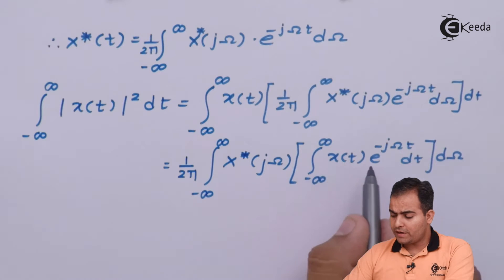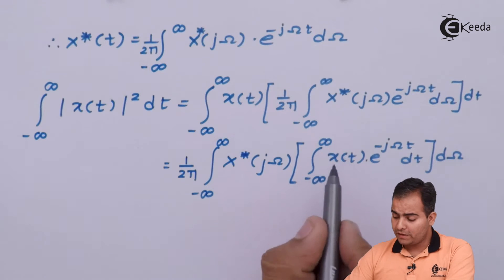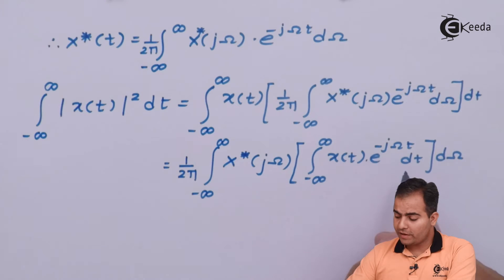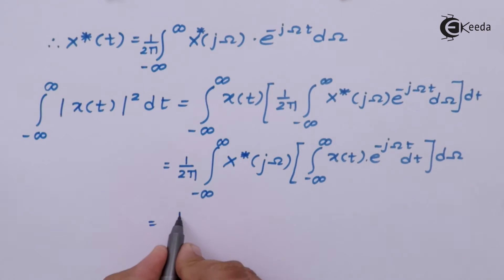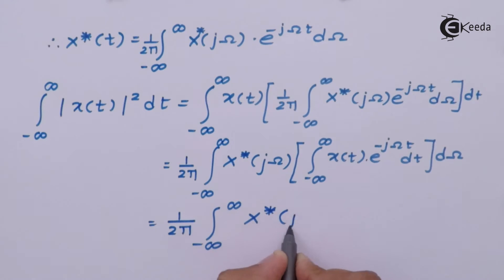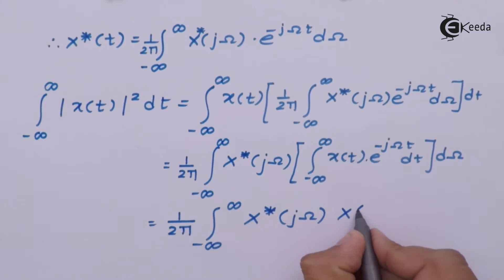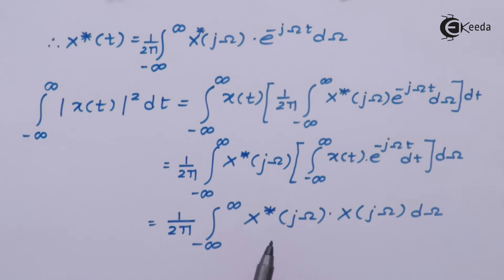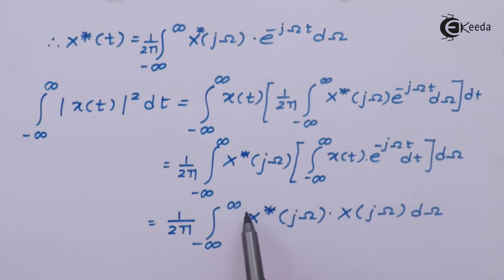Now look here: the integration from minus infinity to infinity of x(t) e to the power minus jωt dt is nothing but the definition of the Fourier transform, which is represented by x(jω). As we know that x(t) into x*(t) equals mod of x(t) whole square, similarly x(jω) and x*(jω) — the product of these two — is always mod of x(jω) whole square. So I will replace x(jω) into x*(jω) by mod of x(jω) whole square.